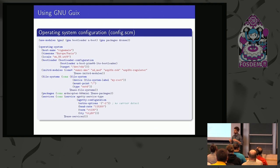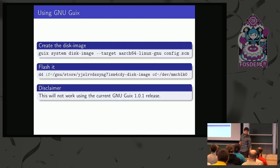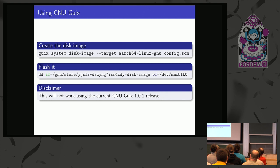GNU Guix is a functional distribution, which means you apply functions to functions that take functions as arguments. To go from this operating system declaration to a disk image, you apply a function: 'hey Guix, take my operating system and make a disk image from it.' You can run this from your REPL or use a command — you say 'guix system disk-image' from the configuration file for this board architecture. Then you wait a few minutes, get the disk image, flash it on an SD card, plug it in the board, and it works.